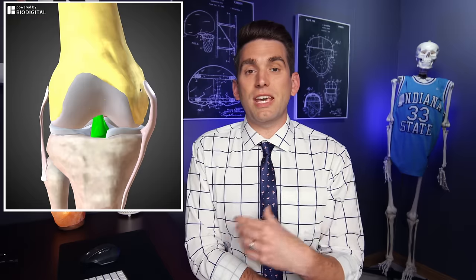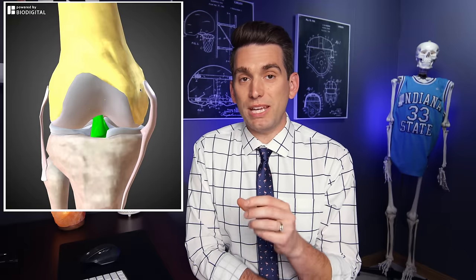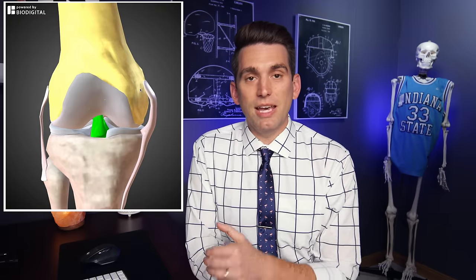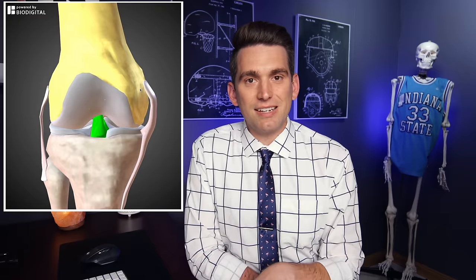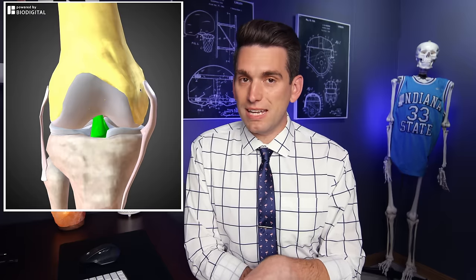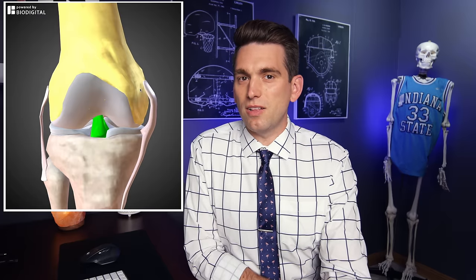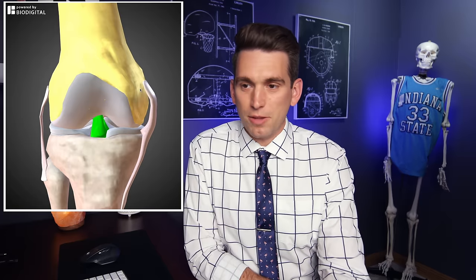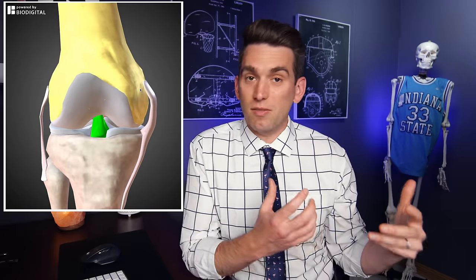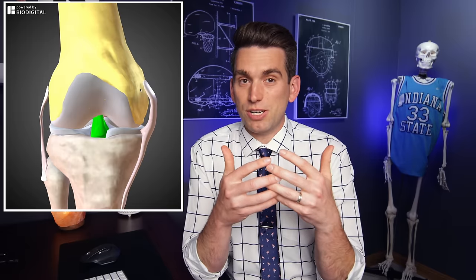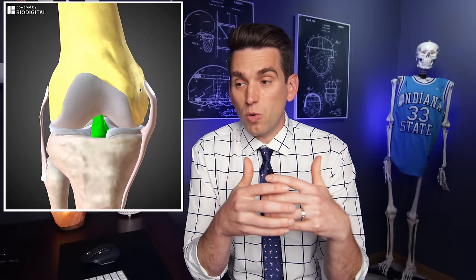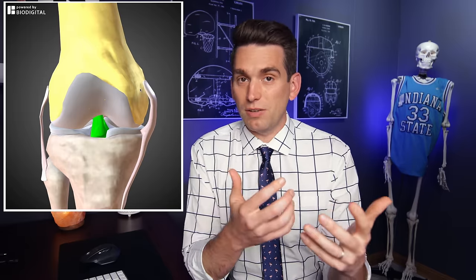Some key terminology: a sprain is an injury to a ligament, such as the ACL, and a strain is an injury to a muscle or a tendon. There really is nothing that happens to an ACL in the acute sense other than a tear, whether it's a very mild partial tear with just some microscopic tearing and stretching of the fibers, or it's a full thickness complete rupture. There are a few key things that we can look for on every ACL tear that explain the mechanism of why it occurs.